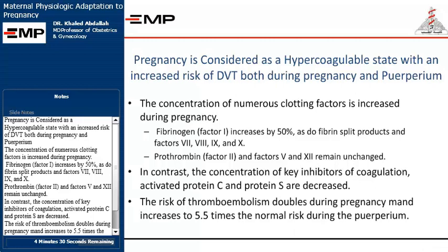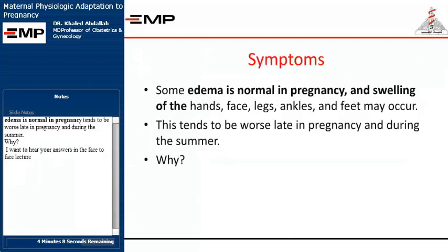Prothrombin (factor 2) and factors V and XII remain unchanged. In contrast, the concentration of key inhibitors of coagulation — activated protein C and protein S — are decreased. The risk of thromboembolism doubles during pregnancy and increases to 5.5 times the normal risk during the puerperium. Edema is normal in pregnancy, tends to be worse late in pregnancy and during the summer — a question to be answered in the face-to-face lecture.